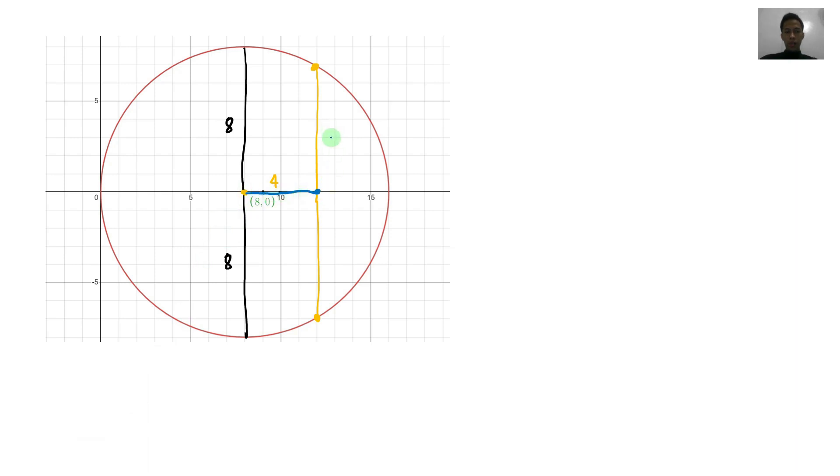So let's say, ito ay A. Ito ay A. So hatiin natin sa dalawa para makompute natin siya using the Pythagorean theorem. So this is your radius here. So same lang siya dito. So that is 8. And the length of the chord, so let's say L, is just equal to 2 times A. Kasi itong dalawa, hinati lang natin. So length of the chord is 2A.